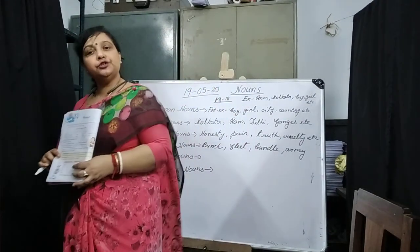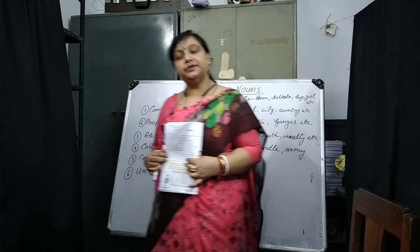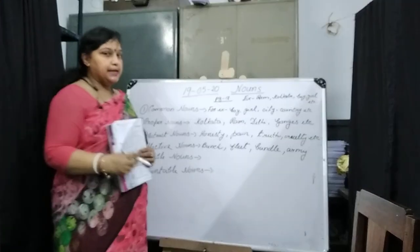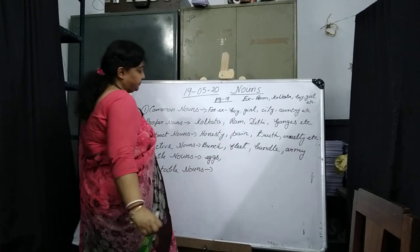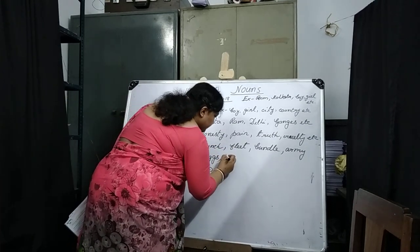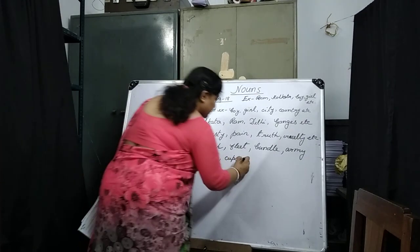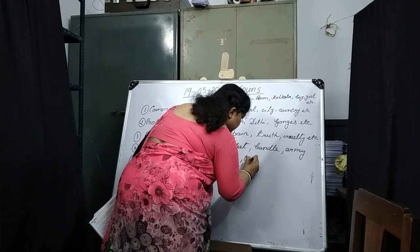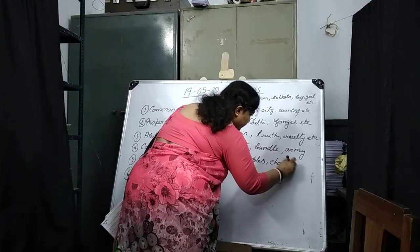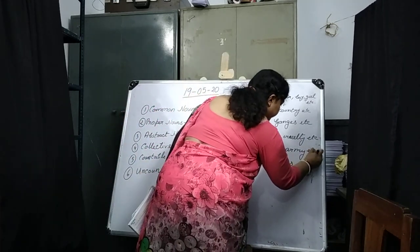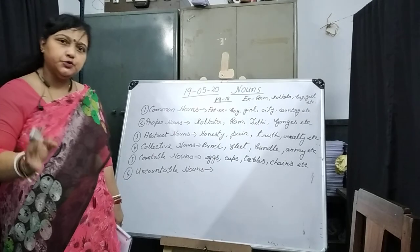Now, countable nouns. What are countable nouns? Nouns which can be counted are called countable nouns. For example: eggs, cups, tables, chairs. All these are countable nouns which we can count.